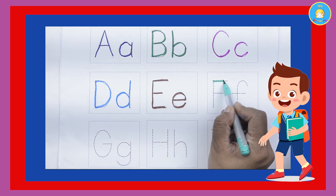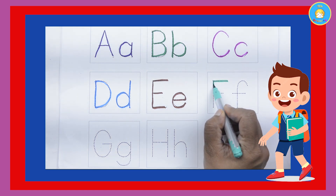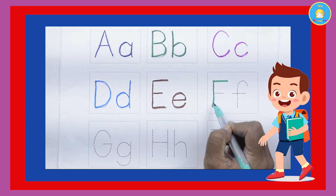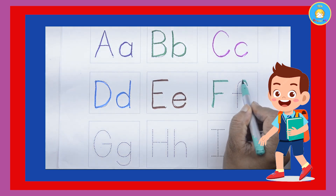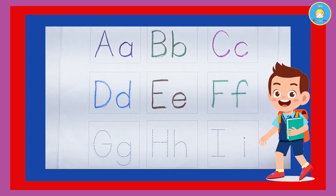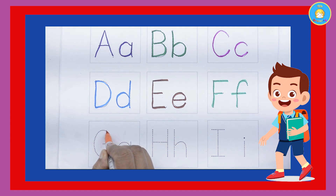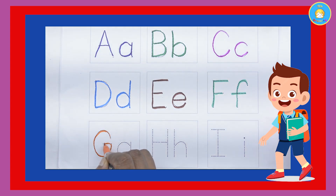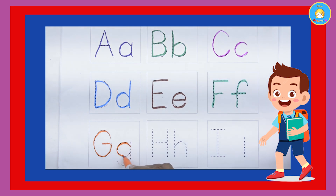Capital F. F for fish. Small letter f. F for fish. Capital G. G for gun. Small letter g. G for gun.